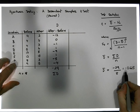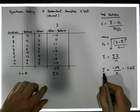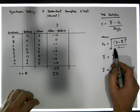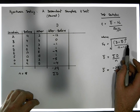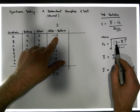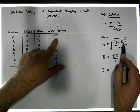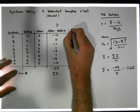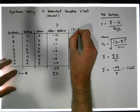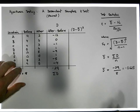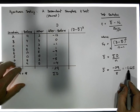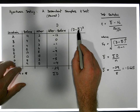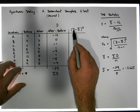Now that we've calculated the average difference, what we need to do is calculate the standard deviation. To do that, for every difference we've observed, we need to take away the average difference and then square it. So what I'm going to calculate is (d minus d-bar) squared, where d-bar is equal to minus 3.625. Note that a minus times a minus is a plus, so effectively we're adding 3.625 to our differences.